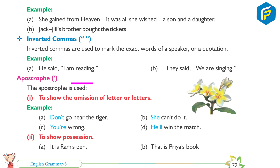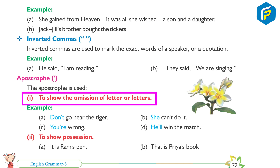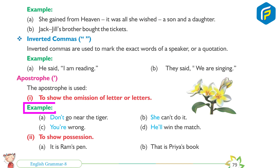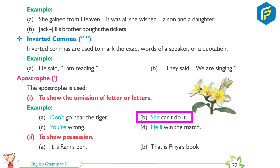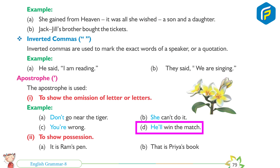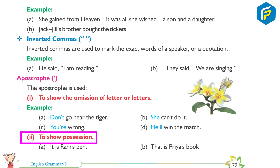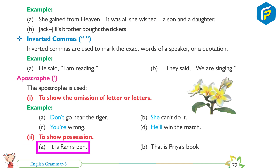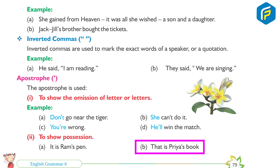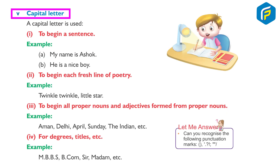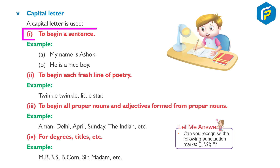Apostrophe: The apostrophe is used: one, to show the omission of a letter or letters. Example: Don't go near the tiger. She can't do it. You are wrong. He will win the match. Two, to show possession. Example: It's Ram's pen. That is Priya's book.